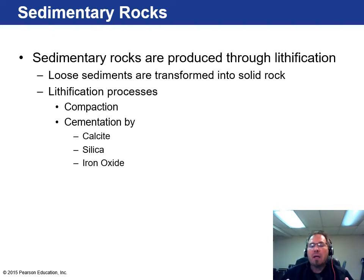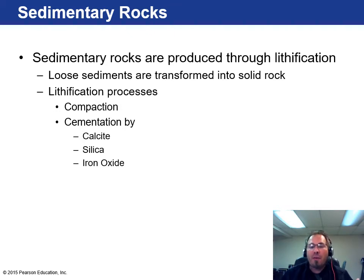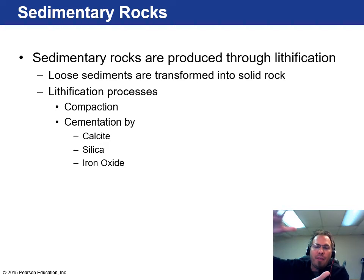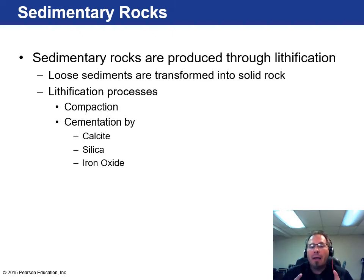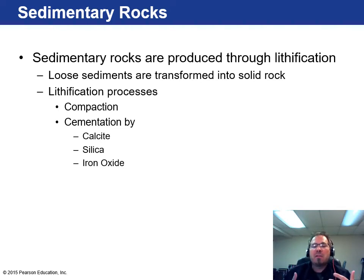Sedimentary rocks form through a process called lithification. Usually it's by compaction — one layer lands on another, then the next layer, then the next. Over time, that weight compacts everything and it gets cemented by whatever's available in that environment. Sometimes it's calcite, sometimes it's silica, and depending on what's available is what type of sedimentary rock forms. The binding is mostly silica or calcite; iron oxide, rarely.